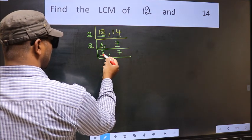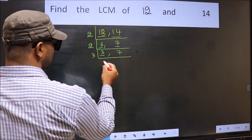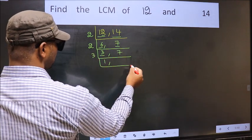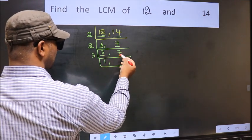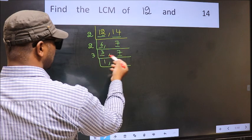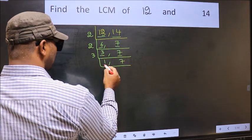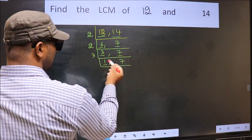Now here we have 3. 3 is a prime number, so 3, 1 is 3. The other number 7 is not divisible by 3, so we write it down as it is. Now we got 1 here.